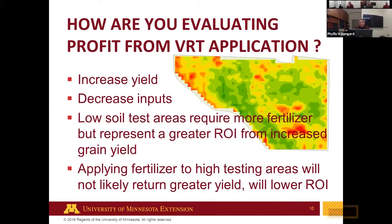For evaluating profit from variable rate, either increase yield or decrease inputs. With P and K, cutting fertilizer rates won't increase yield, so decreased inputs are what we're really going to see from variable rate. Over-applying doesn't increase yield either. The key is assessing areas where it makes economic sense to apply fertilizer — that's really what makes technology and variable rate application worthwhile.